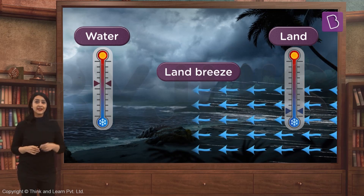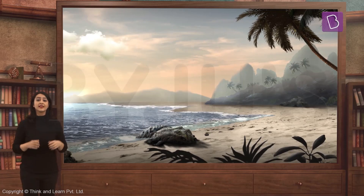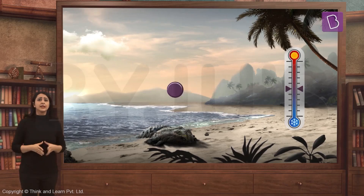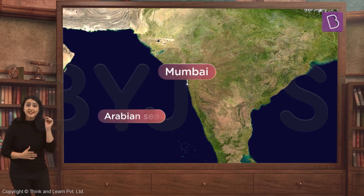Thus the temperature of both the land and sea stays comfortable. We can conclude that when there is a water body around a piece of land, the land experiences a moderate climate — neither too hot nor too cold. Let's take the example of two places: Mumbai and Delhi. Mumbai is near a large water body, which is the Arabian Sea.